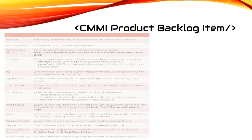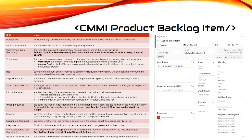For the CMMI product backlog item, the Description field should provide enough detail for estimating how much work will be required to implement the requirement. Impact Assessment captures the customer impact of not implementing this requirement. Value Area is one of two areas — Architectural or Business. Architectural means technical services to implement business features; Business means services that directly deliver customer value. Business is the default value.